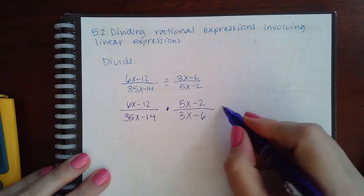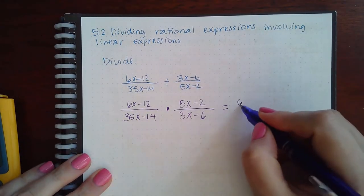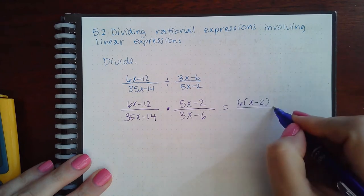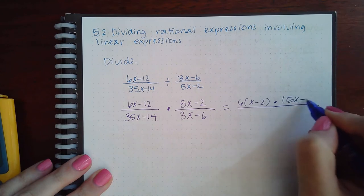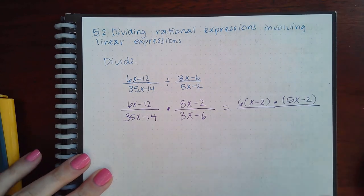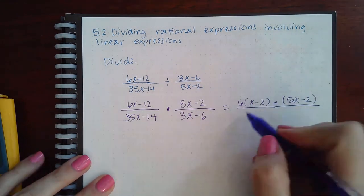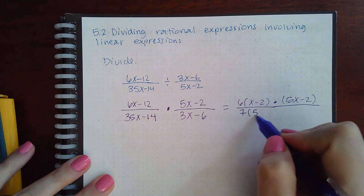So there I can factor out a GCF of 6. I cannot factor anything from 5x - 2, so the whole thing is its own factor. Here I can factor out a 7, I get 5x - 2.